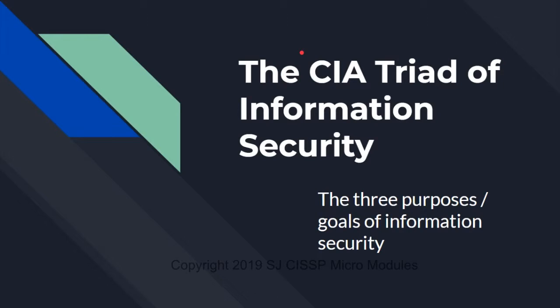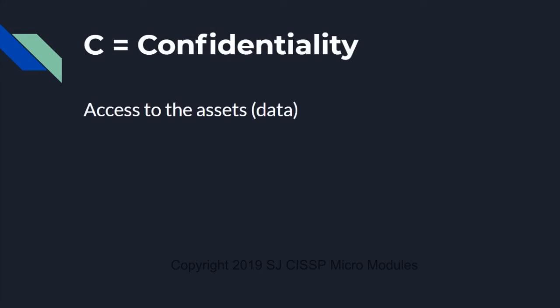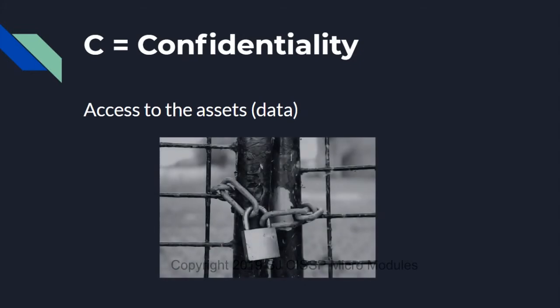CIA stands for confidentiality, integrity, and availability. The C stands for confidentiality, which means that only those who are authorized have access to the data. An example of this would be a padlock on a gate, a lock on a file cabinet, or a locked door in a storage room.